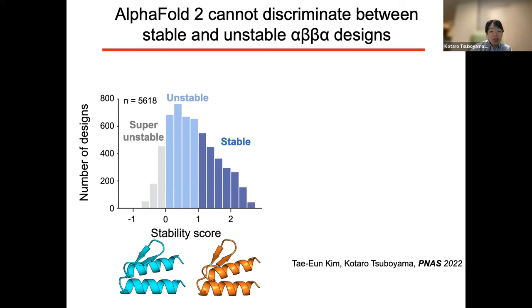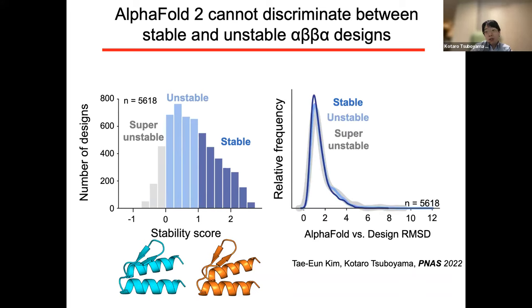For example, Taeyeon and I designed de novo proteins with an alpha-beta-beta-alpha topology. We quantified folding stability of these structures using yeast display proteolysis method, published in 2017. Based on the stability score, we split the designs into three groups from unstable to stable ones. Then we utilized AlphaFold2 to predict their structures. Unfortunately, AlphaFold2 predicted almost identical structures for all three groups, which means AlphaFold2 couldn't discriminate the stable designs from unstable ones. This result further suggests that AlphaFold2 is not so useful in de novo protein design.